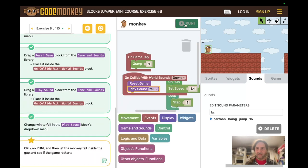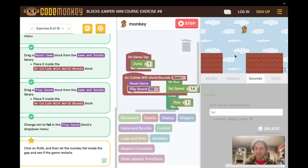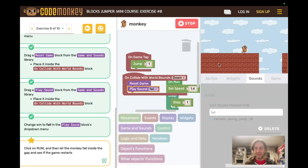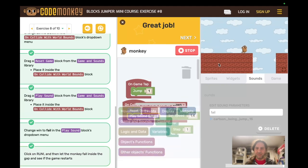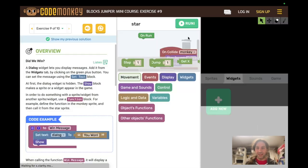Click run and let the monkey fall inside the gap. If they're too clever and just have him keep jumping, then they won't actually succeed in this step. Stop. Run again. Let the monkey fall. And right now the game resets and the monkey just keeps on falling. Great job. Next.